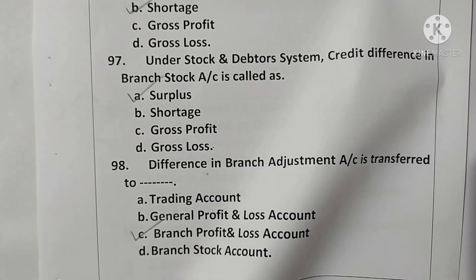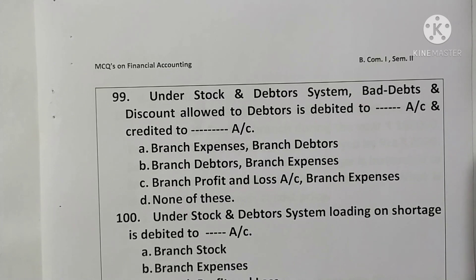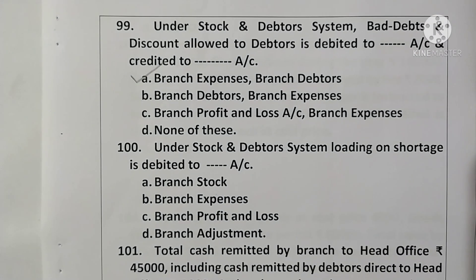Question 99: Under the stock and debtor system, bad debts or discount allowed to debtors — the branch expenses account is debited and the branch debtor account is credited. Option A is correct.